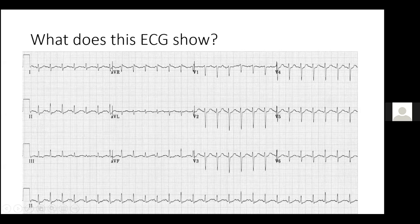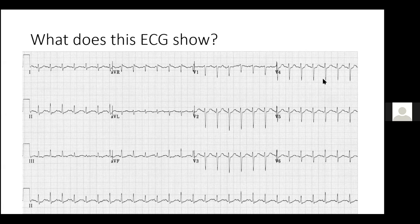What does this ECG show? The main finding is sinus tachycardia. A lot of places will tell you S1Q3T3 is the main finding for PE, but actually the most common ECG finding is sinus tachycardia — that's what this ECG shows.